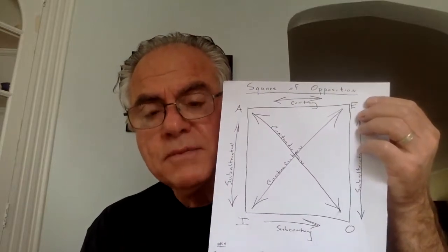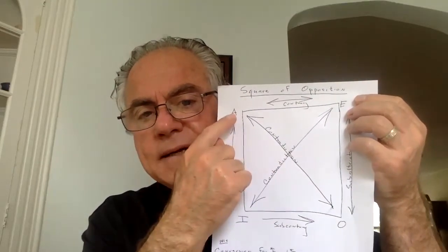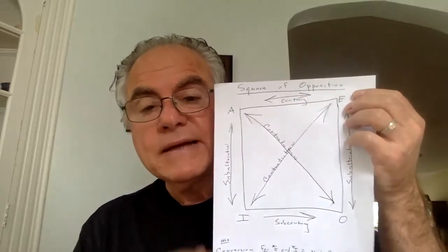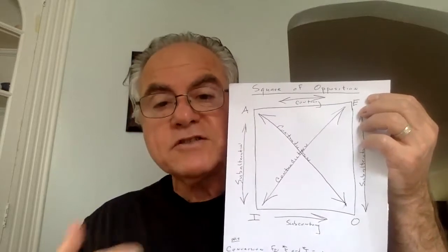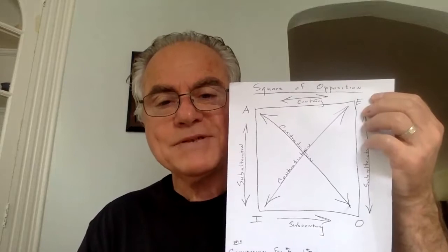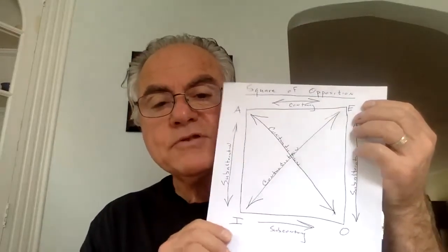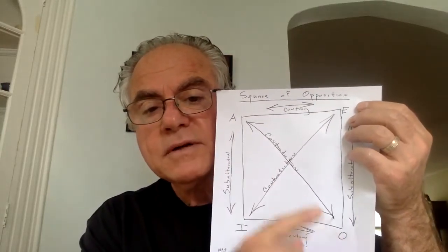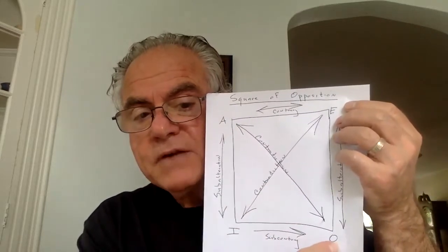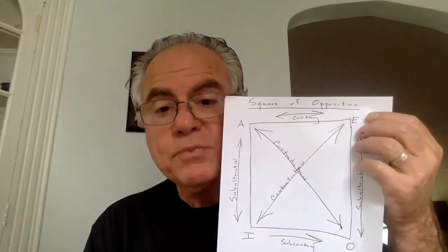To summarize: if 'all S is P' is true, then 'some S is not P' is false. If 'all S is P' is false, then 'some S is not P' is true. And it goes both ways: if O is true, A has to be false; if O is false, A is true. Just remember: contradictories cannot both be true, nor can they both be false. The same thing works between E and I: if 'no S is P' is true, then 'some S is P' has to be false, and vice versa.